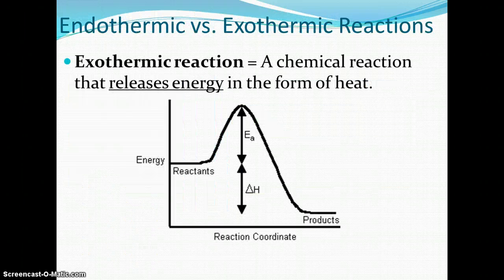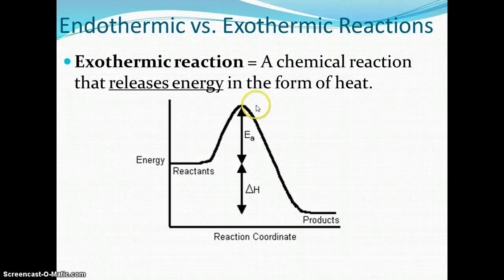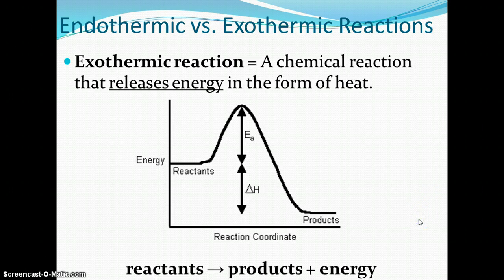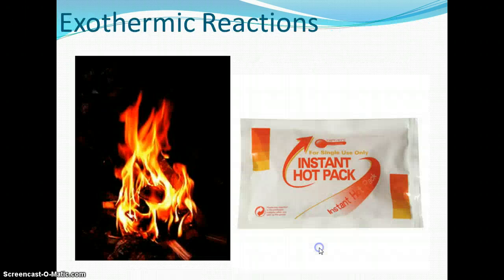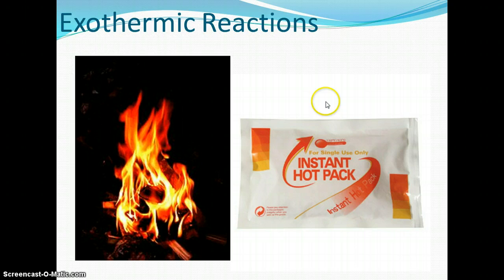Exothermic reactions are chemical reactions that release energy in the form of heat. There's only a little activation energy needed, and then a big drop-off as energy or heat is released to the surroundings. Two examples: fire, and instant hot packs that you crack and they become hot — that heat comes from the reaction itself, from the reactants making a product that is hot. So exothermic reactions give off heat. Go ahead and work on your worksheet, and good luck.